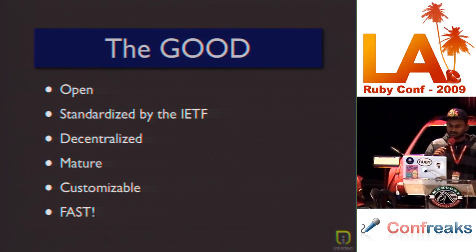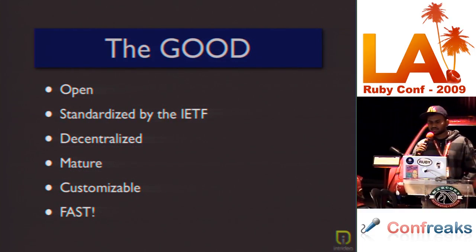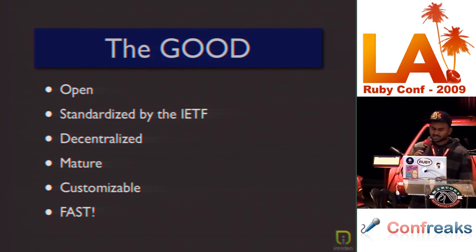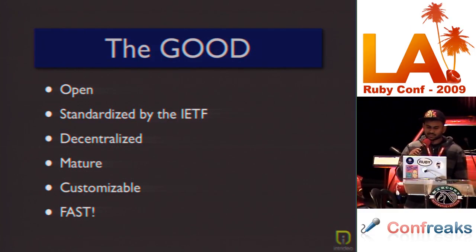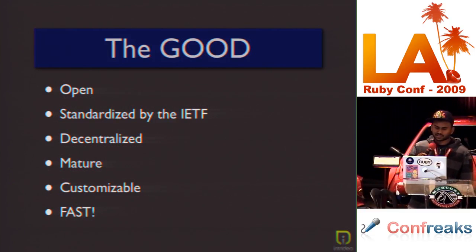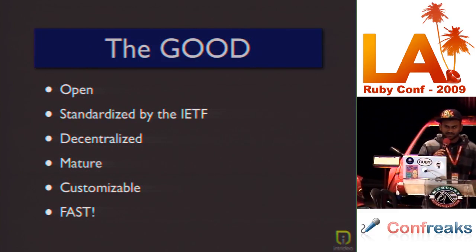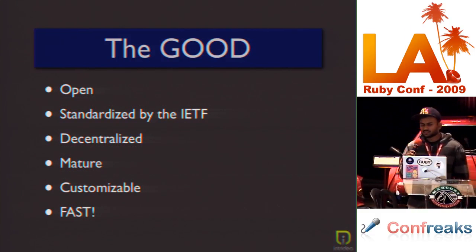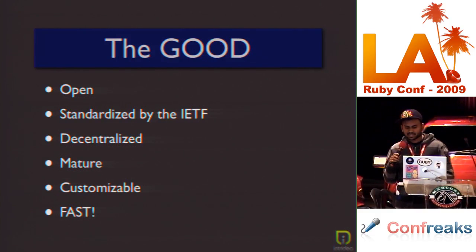The good things about XMPP: first of all, it's open — anybody can contribute new features and comment on features already submitted. You can write your own XMPP servers. Everything is open, and it's standardized by the Internet Engineering Task Force. It's also decentralized — you can run your own servers anywhere, and most of these servers can actually talk to each other. It's very mature; it's been about 10 years since it started. It's very customizable and since it's message-based, it's actually pretty fast.